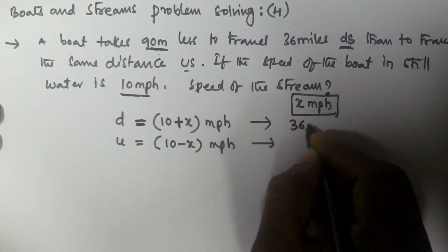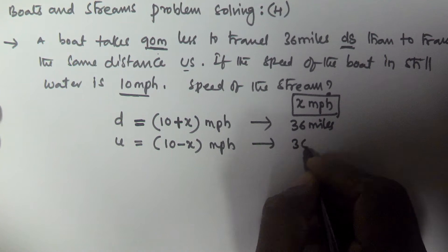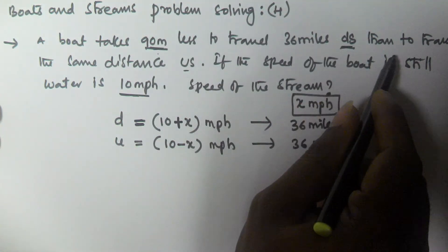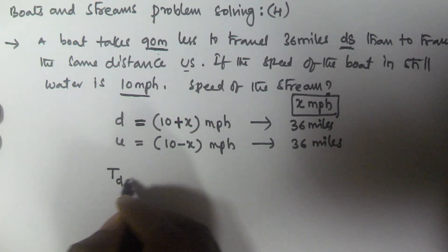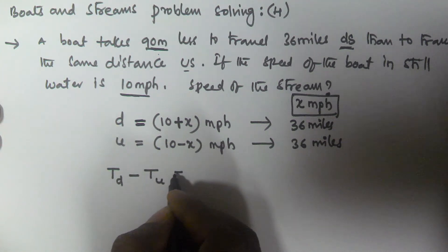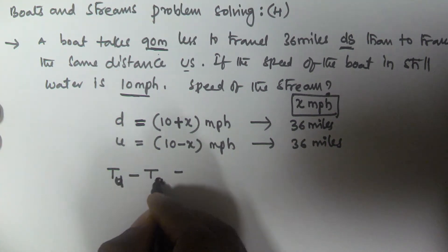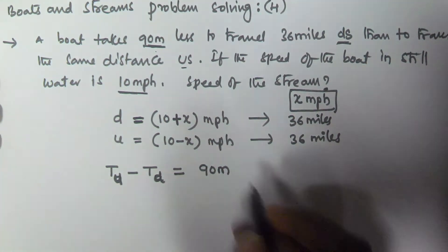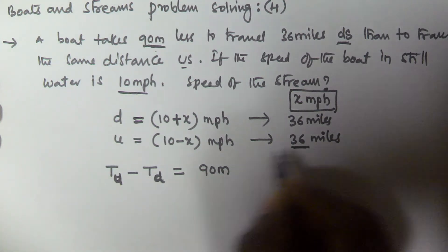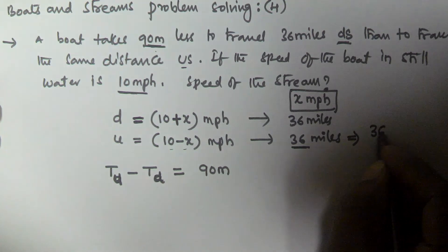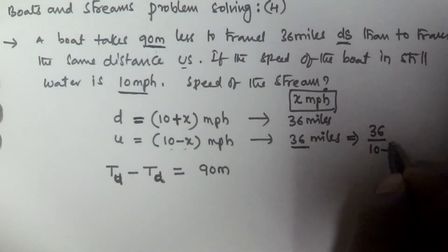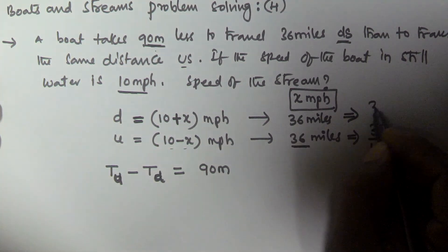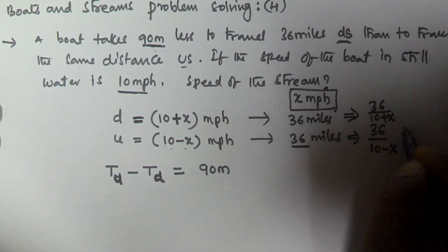If you observe the question, the boat travelled 36 miles downstream and 36 miles upstream. According to the given question, a boat takes 90 minutes less to travel 36 miles downstream. So the time taken to travel downstream minus time taken to travel upstream is equivalent to 90 minutes, because upstream takes more time. The time taken for upstream is 36 divided by (10 minus x), and the time taken to travel 36 miles downstream is 36 divided by (10 plus x).